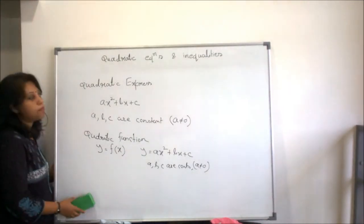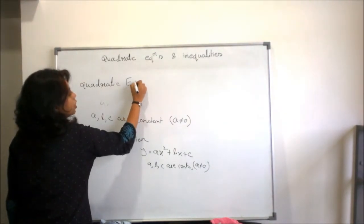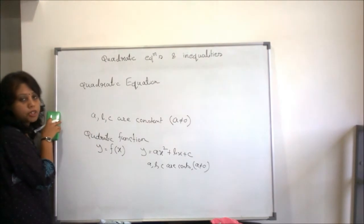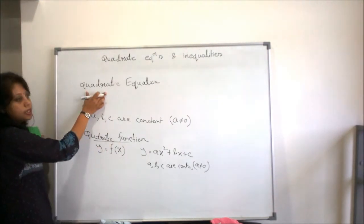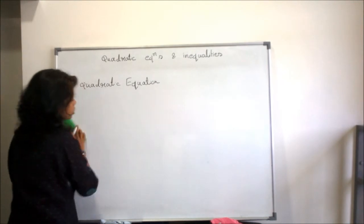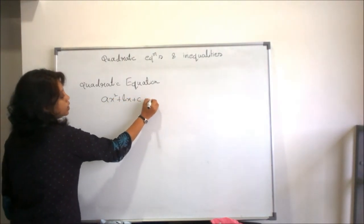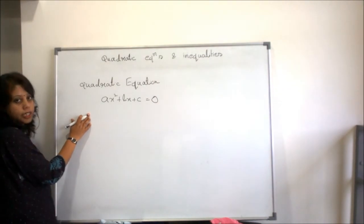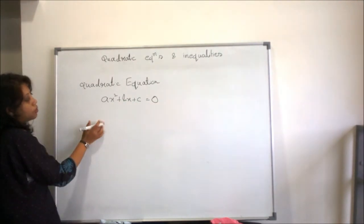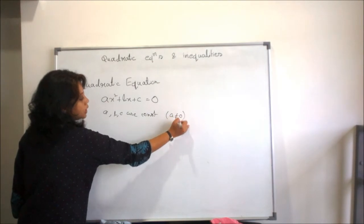Now we are coming to quadratic equation. We have already discussed what is a quadratic expression and what is a quadratic function. For an equation there must be an equality sign. So when our expression ax² + bx + c is equal to 0, this is called the quadratic equation. Here a, b, c are constants and a is not equal to 0.